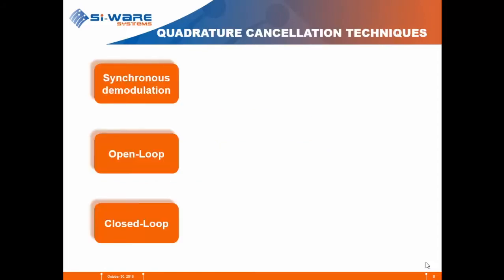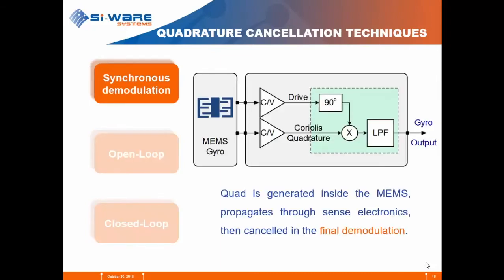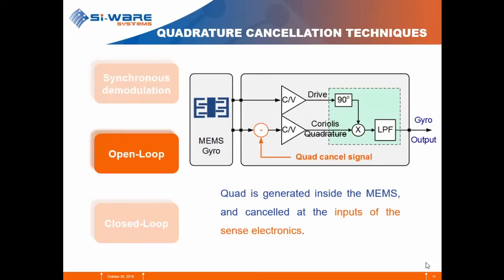The cancellation techniques can be categorized into three main categories. The first is synchronous demodulation, where the quadrature is generated inside the MEMS and left to propagate through the sense electronics, cancelled only at the final demodulation. The second is open loop quadrature cancellation, where the quadrature is left generated inside the MEMS but cancelled at the input of the sense electronics using a feedback signal.